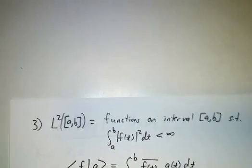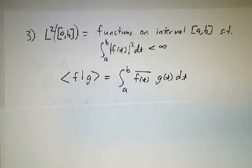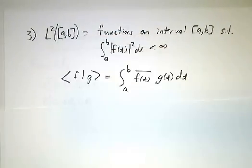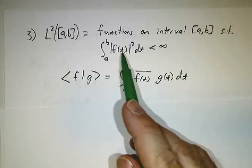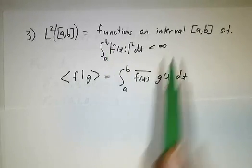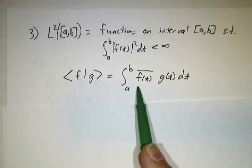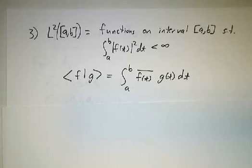The third example is you can take L2 not of the entire line, but of just the interval from a to b. So they're going to be functions that you square them and integrate them from a to b, you get something finite. And then the inner product is going to be the integral of f bar times g from a to b.